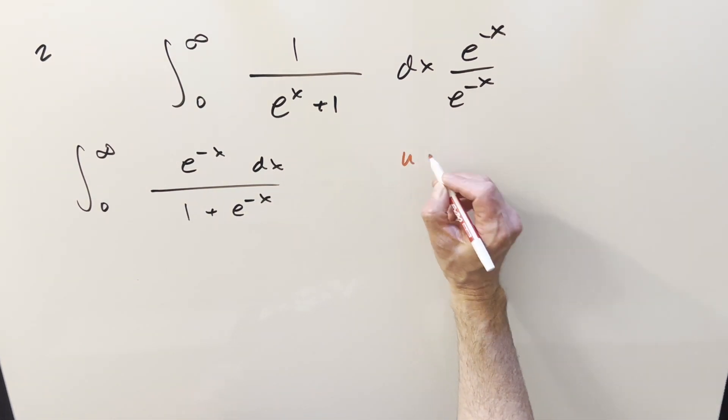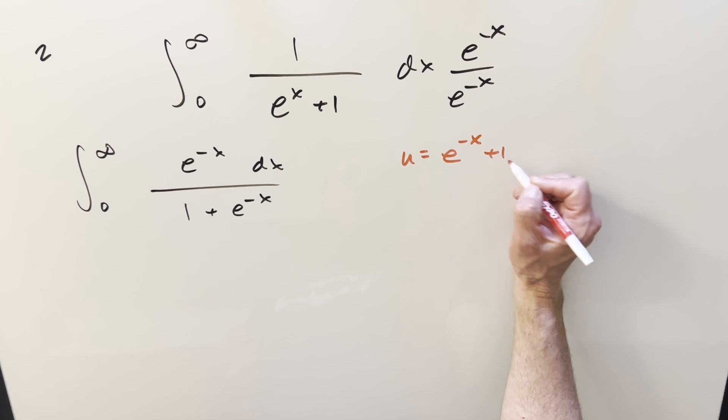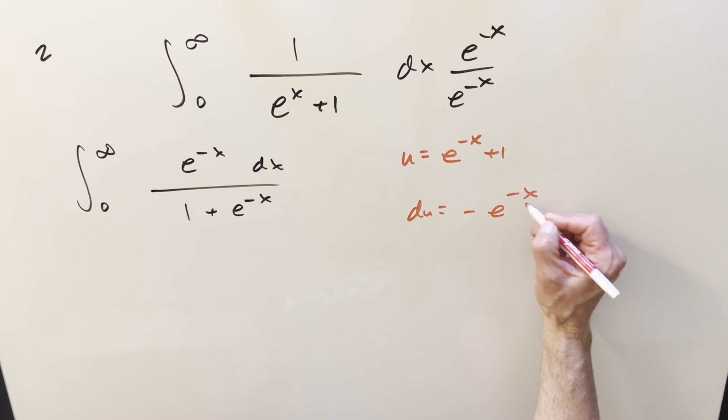And then for this here, we can do a u substitution. Really easy. I was going to do just e minus x, but let's do the whole thing, right? Let's do e minus x plus 1, getting the whole denominator. Take a derivative. du is going to be just minus e minus x. That's a zero, and we differentiate dx.